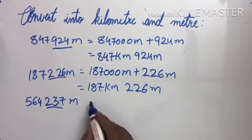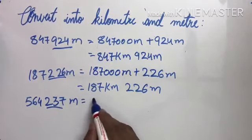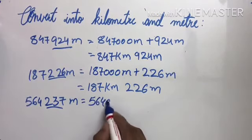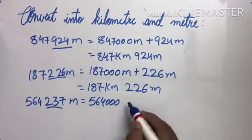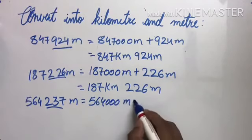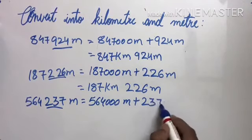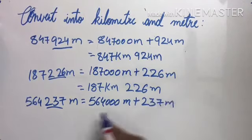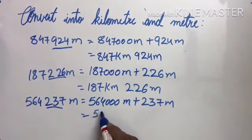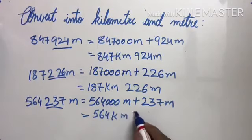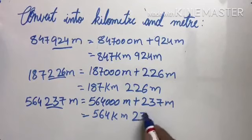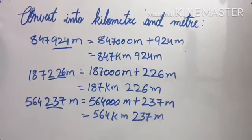Last example: five hundred sixty-four thousand two hundred and thirty-seven meters. The last three digits are separated, giving five hundred sixty-four thousand meters plus two hundred and thirty-seven meters. Five hundred sixty-four thousand meters is five hundred and sixty-four kilometers, so our answer is five hundred and sixty-four kilometers and two hundred and thirty-seven meters. Thank you.